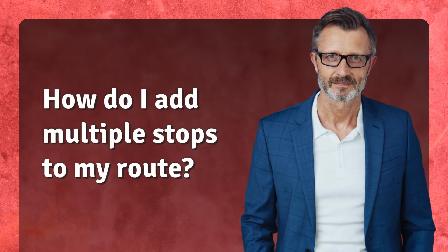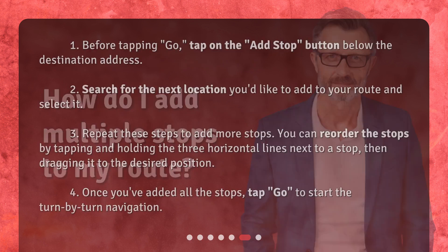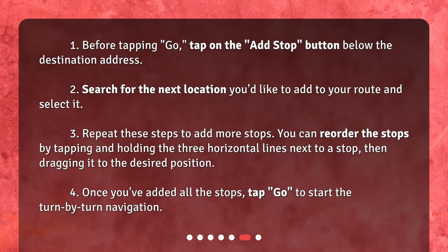How do I add multiple stops to my route? 1. Before tapping Go, tap on the Add Stop button below the destination address. 2. Search for the next location you'd like to add to your route and select it. 3. Repeat these steps to add more stops. You can reorder the stops by tapping and holding the three horizontal lines next to a stop, then dragging it to the desired position.